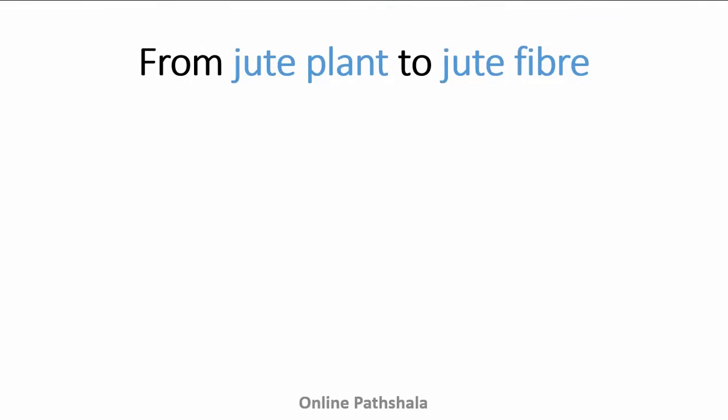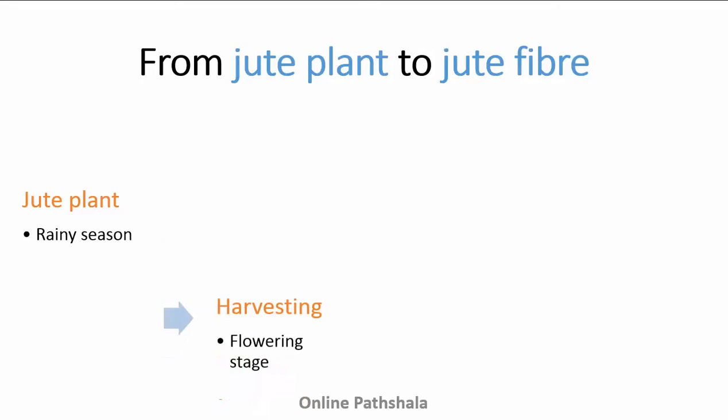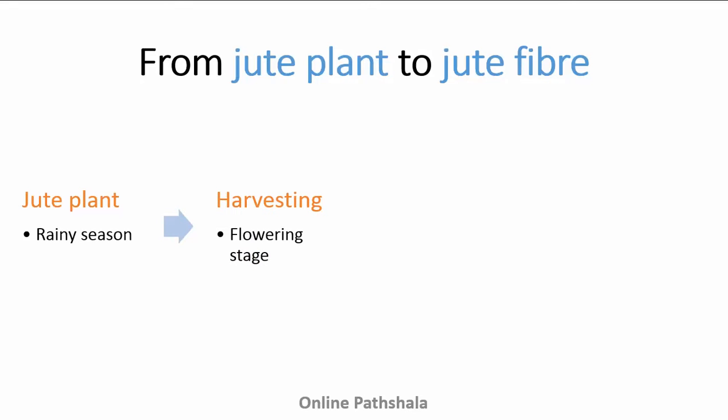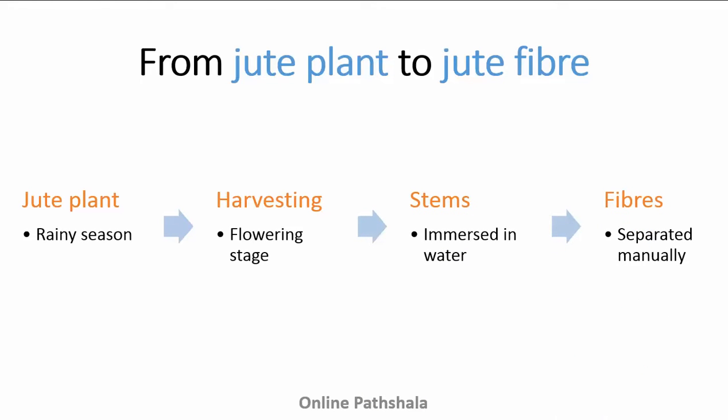So how do we obtain jute fibre from the jute plant? Jute fibre is obtained from the stem of the jute plant. Jute is cultivated in the rainy season. The jute plant is harvested when it is at the flowering stage. The stems of the harvested plant are immersed in water for a few days. The stems rot and fibres are separated by hand.